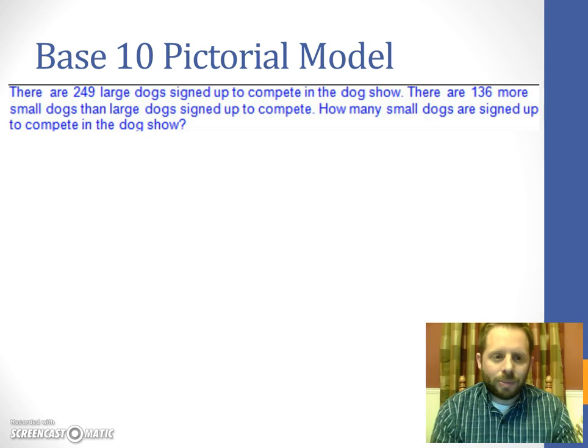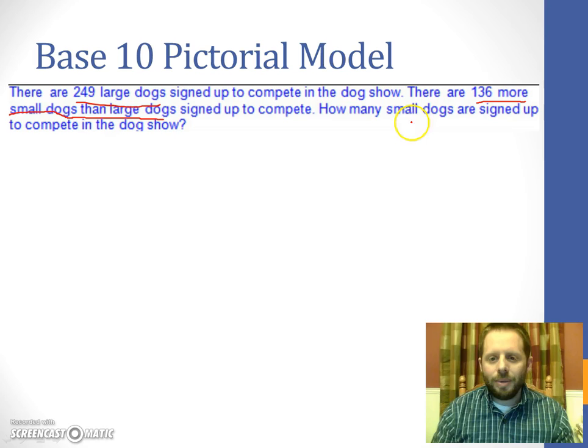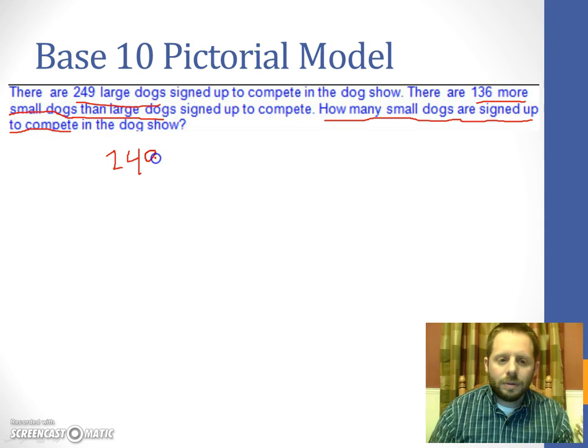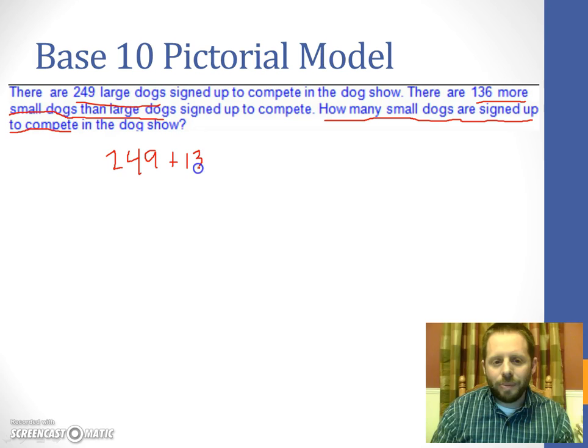Let's start by looking at a pictorial model. We're going to use base 10 blocks to represent this. It says there are 249 large dogs and there are 136 more small dogs than large dogs signed up to compete. How many small dogs are signed up to compete in the dog show? So we need to increase our number by 136 to find the number of small dogs.